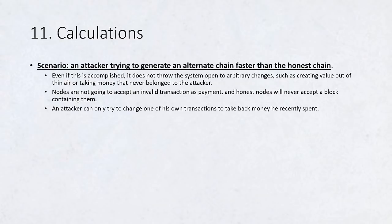Calculations. We consider the scenario of an attacker trying to generate an alternate chain faster than the honest chain. Even if this is accomplished, it does not throw the system open to arbitrary changes, such as creating value out of thin air or taking money that never belonged to the attacker. Nodes are not going to accept an invalid transaction as payment, and honest nodes will never accept a block containing them. An attacker can only try to change one of his own transactions to take back money he recently spent.